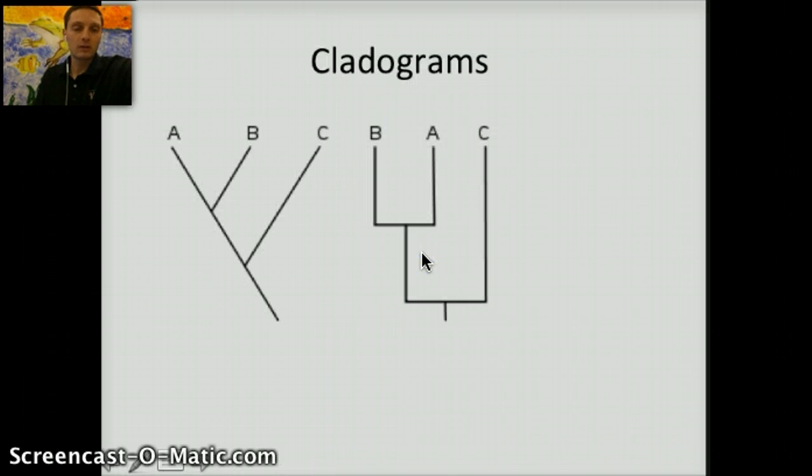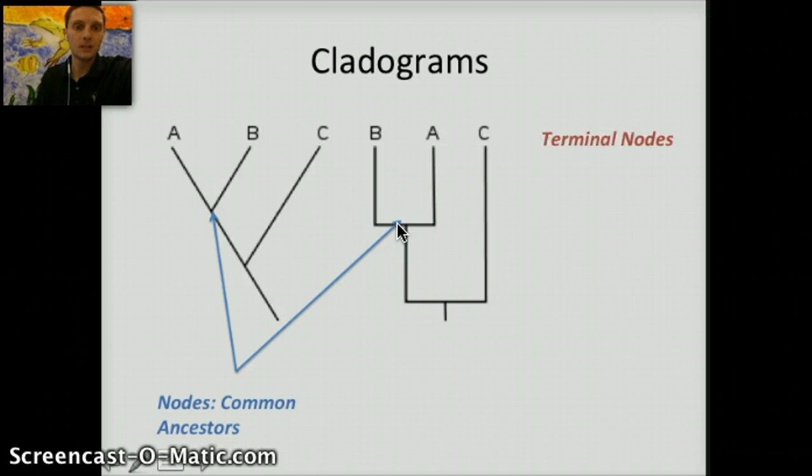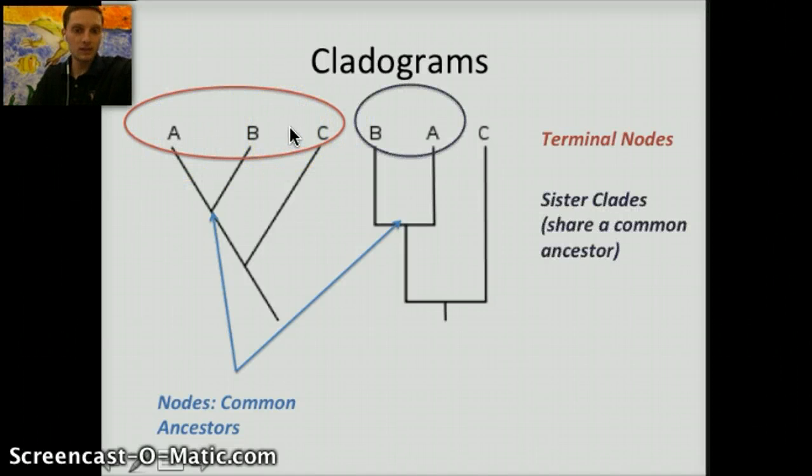Let's look at a couple simple cladograms here to outline some of these concepts. Nodes, in this case, represented here and here. Terminal nodes representing ends of the lines, so A, B, and C representing terminal nodes. Sister clades, in which they share a common ancestor, would be A and B because of the common ancestor here. And then the root species or organism being right here for our cladogram.